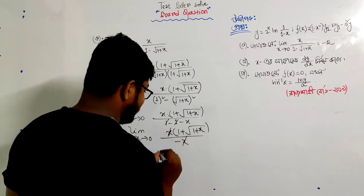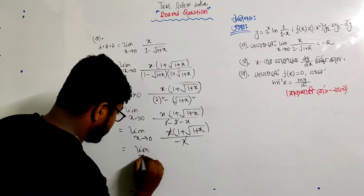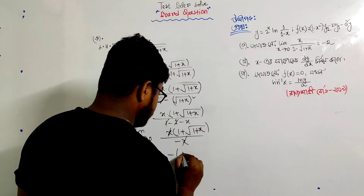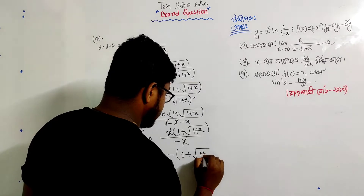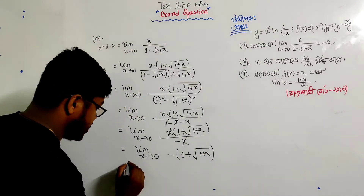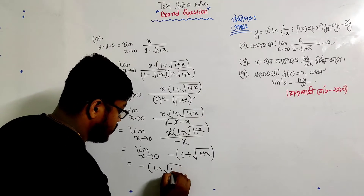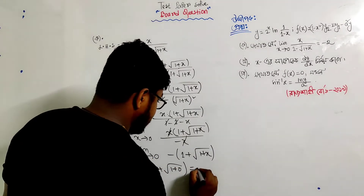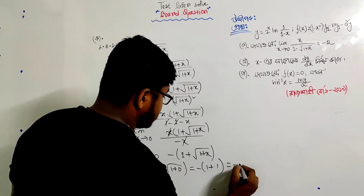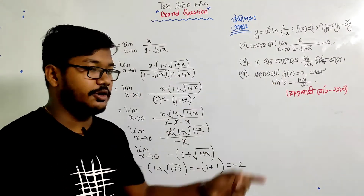So we get limit x tends to 0 of minus 1 over 1 plus root of 1 plus x. As x tends to 0, root of 1 plus x tends to 1, so the denominator becomes 1 plus 1 equals 2. Therefore the limit equals minus 1 over 2, which is minus 2 when we take both sides.